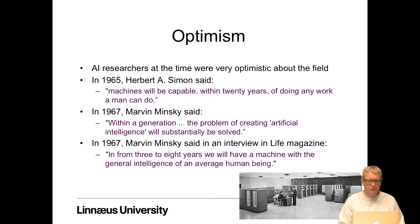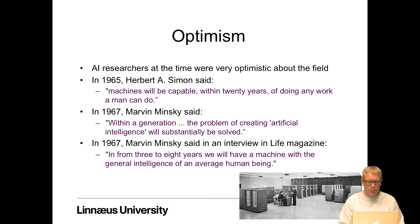There was a lot of optimism during this time. For example, in 1965, Herbert A. Simon said: 'Machines will be capable within 20 years of doing any work a man can do.' In 1967, Marvin Minsky said: 'Within a generation, the problem of creating artificial intelligence will substantially be solved.' Minsky also said in a Life magazine interview that in three to eight years we would have a machine with the general intelligence of an average human being. None of this happened — it turned out far more complex than they realized.